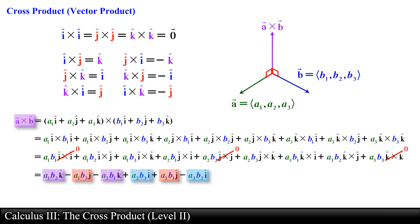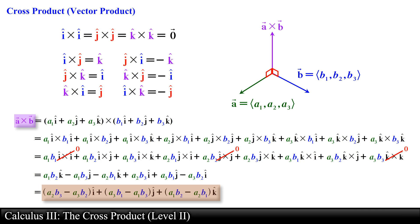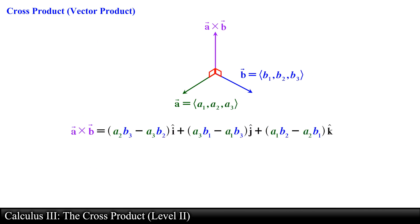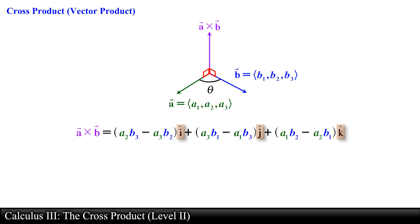The last step is to group the terms that contain the unit vector i hat, j hat, and k hat together. Doing that we obtain the components of the final vector which represents the cross product between vector A and vector B. Notice that the cross product produces a vector with an x, y, and z component. Recall that the dot product produces a scalar and not a vector.